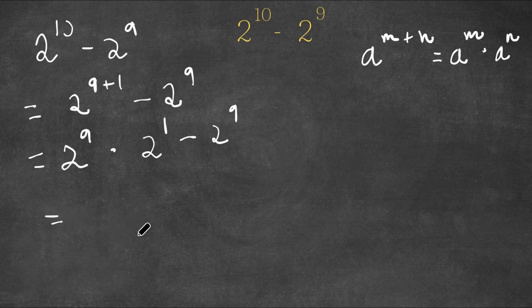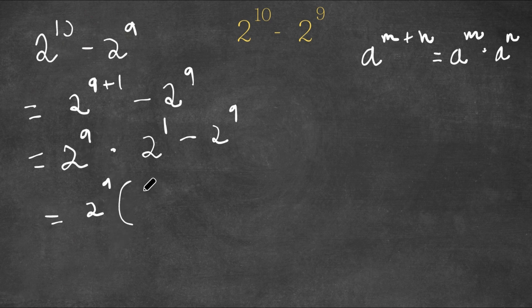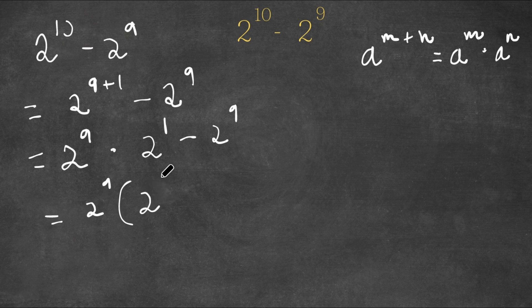Now I'm going to factor out 2 to the power of 9 from this. So if I factor out 2 to the power of 9, I get 2 to the power of 9 times — now 2 to the power of 9 divided by 2 to the power of 9 is 1, and 2 to the power of 9 times 2 to the power of 1 divided by 2 to the power of 9 is simply 2 to the power of 1, minus 2 to the power of 9 divided by 2 to the power of 9 which is 1.